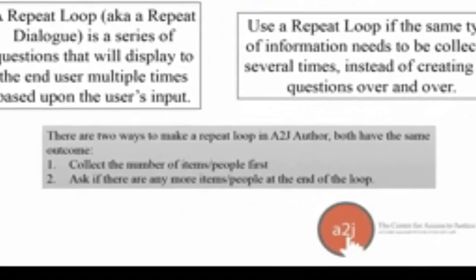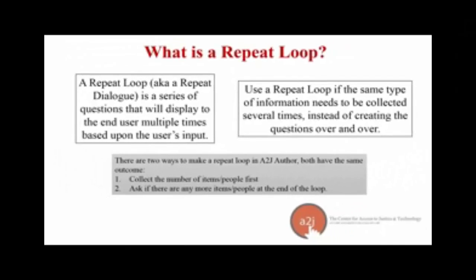There are two ways to make repeat loops in A2J Author, and both have the same outcome. You can collect the number of items or people first and then go through the loop, or you can ask if there are any more items or people to be added at the end of the loop.